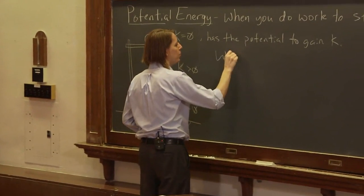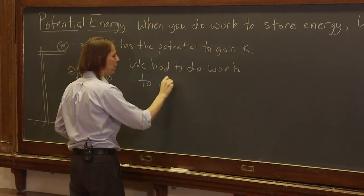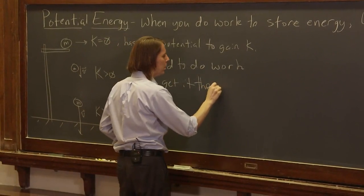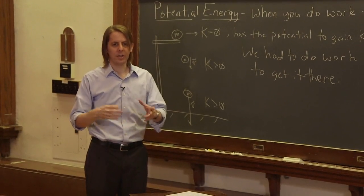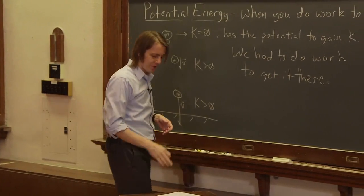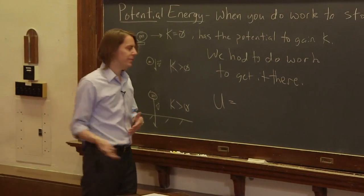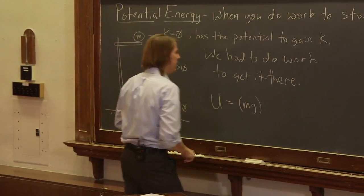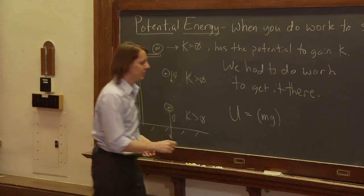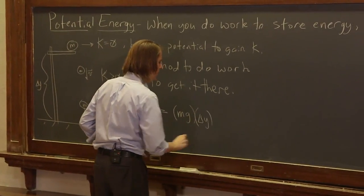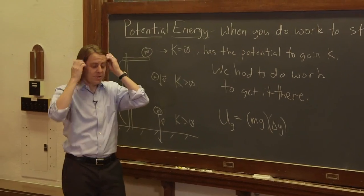So we had to do work to get it there. And the work we had to do to get it there is the potential energy. Just like you do work to create kinetic energy, you do work to give something potential energy. And so U, in this case, equals the work we had to do, which is the force. And like I said, the force we applied was just mg. And the height that we carried it, we could say, since it's vertical, we'll call it delta y, since it's against gravity. So the potential energy, and we're going to call it the gravitational potential energy, Ug, is mg delta y.